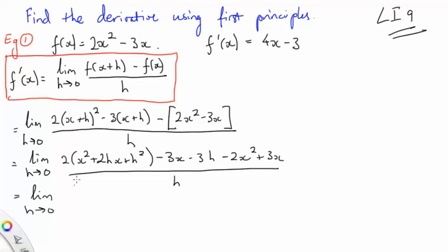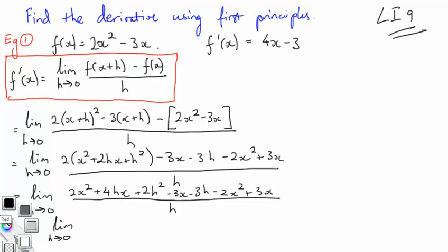And let's expand this bracket. Limit as h approaches 0. So that's 2x² plus 4hx plus 2h² minus 3x minus 3h minus 2x² plus 3x. All divided by h. Okay. Keep going. Limit as h approaches 0. Let's do some cancelling.